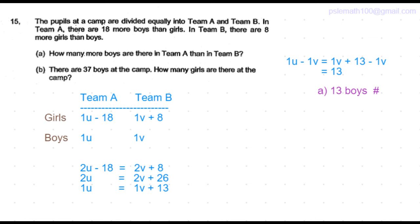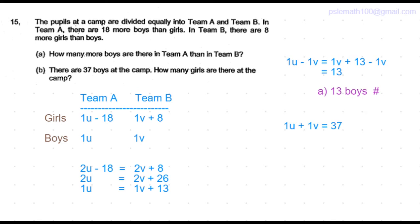Part B of the question is: there are 37 boys at the camp. How many girls are at the camp? We know that the total number of boys is given as 37, which is 1u plus 1v.